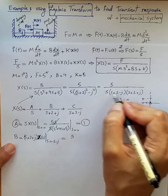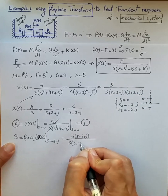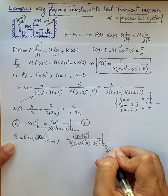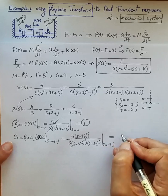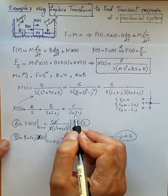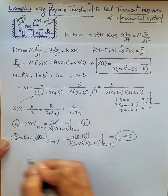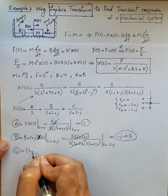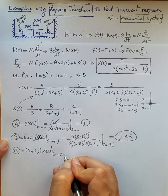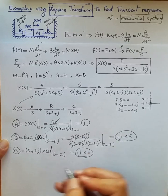That gives us 5·(s+2+j) / [s·(s+2+j)·(s+2−j)] evaluated at s = −2−j. The (s+2+j) terms cancel, and simplifying, we find B = −j − 0.5. Because of the complex conjugate nature of the denominator, C is the complex conjugate of B, so C = j − 0.5.